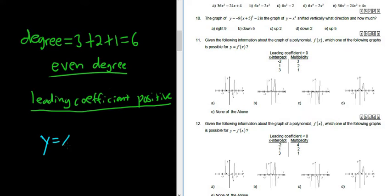Right? y equals x squared has an even degree. And the leading coefficient is 1, so it's positive. So it kind of looks like this. It's a U. So it rises left and rises right.